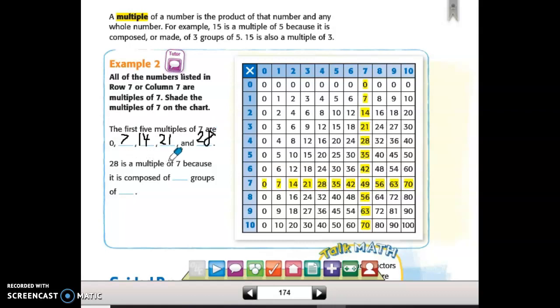And 28 is a multiple of 7 because it is composed of, let's see, 4 groups of 7. So I just drew out 4 groups, 1, 2, 3, 4 groups. Each group has 7 in it.